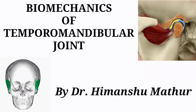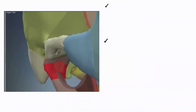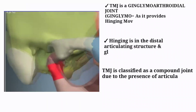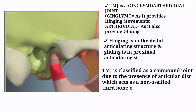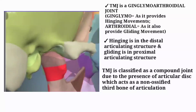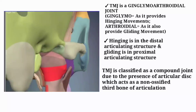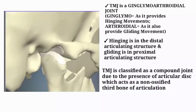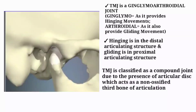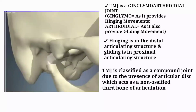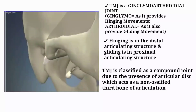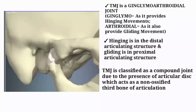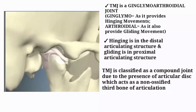Hello everybody and welcome to our new video on biomechanics of the temporomandibular joint. TMJ is a ginglymo-arthrodial joint. Ginglymo means it provides hinging movement and arthrodial means it provides gliding movement. Hinging is in the distal articulating structure and gliding is in the proximal articulating structure. TMJ is classified as a compound joint due to the presence of the articular disc, which acts as a non-ossified third bone of articulation.